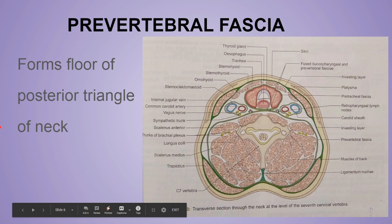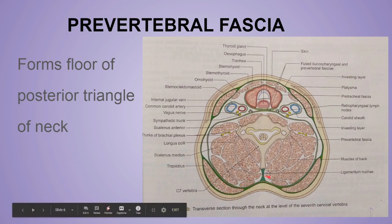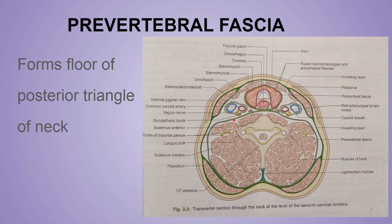Now, the pre-vertebral fascia. The pre-vertebral fascia forms the front of the pre-vertebral muscles. The pre-vertebral muscles are scalenus anterior, scalenus medius, and scalenus posterior. It forms the front of these pre-vertebral muscles and also forms the floor of the posterior triangle of the neck.